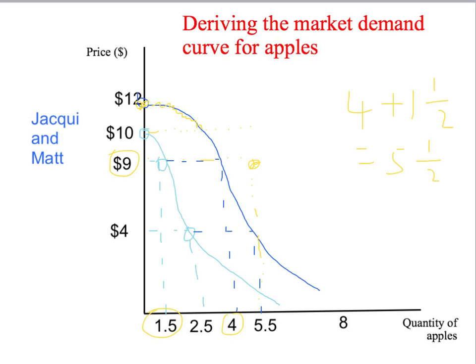What about if we drop the price further to $4 per kilogram? At $4, Matt would like to buy two and a half kilograms and Jackie would like to buy five and a half kilograms. So in total they would like two and a half plus five and a half — eight kilograms of apples altogether. We get another point on the market demand curve where the price of apples is $4 and market demand is eight kilograms. We could obviously continue this, picking a price, adding up the quantity Jackie would like and the quantity Matt would like, and we'd get the market demand curve by joining up all of those points.